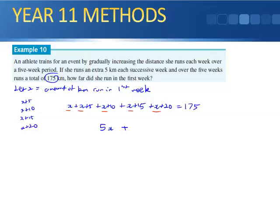1, 2, 3, 4, 5. So 5x plus 50 equals 175. 5x equals 125. So x equals 25 kilometers.